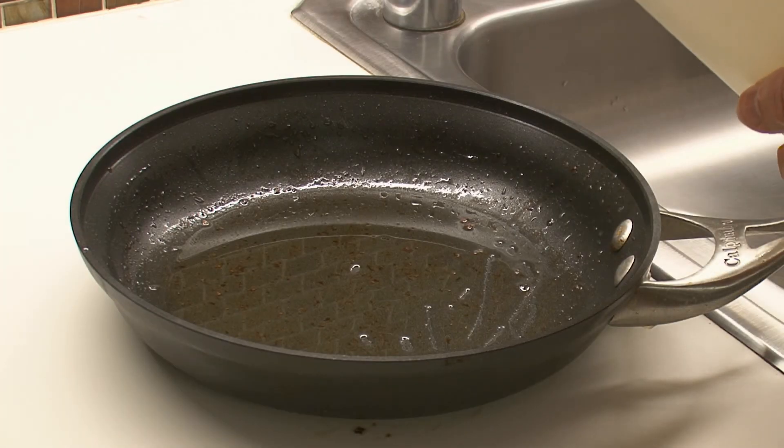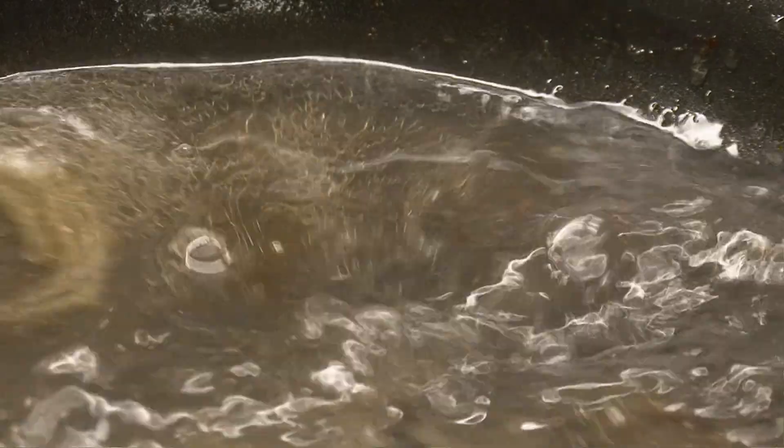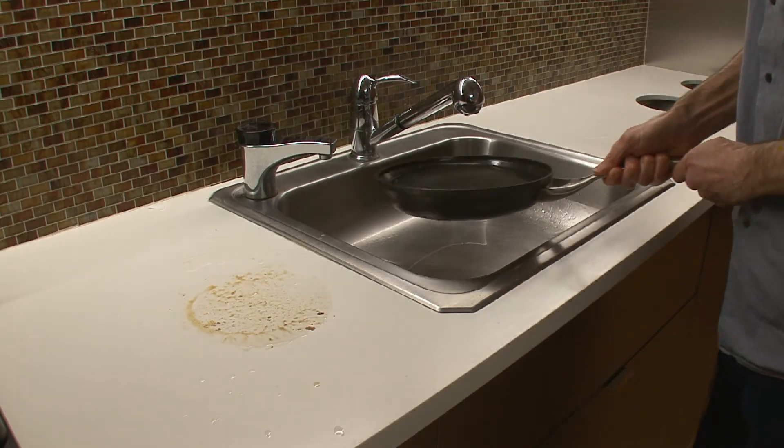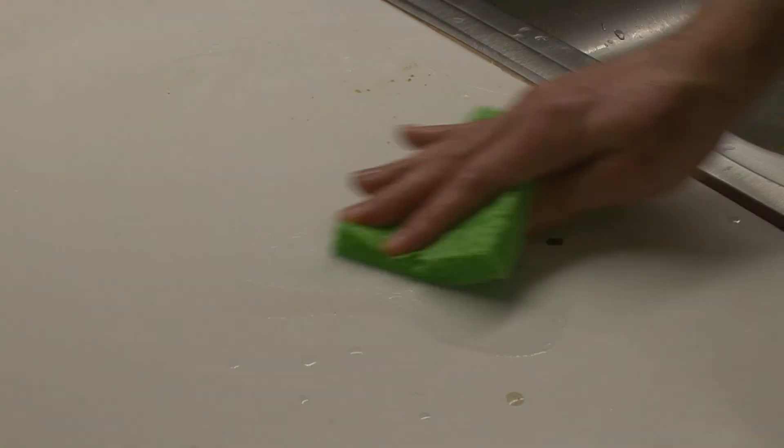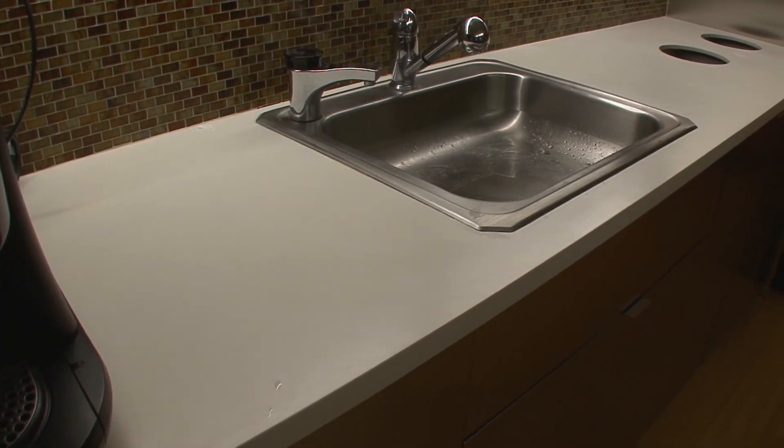The mass of greasy dirt is soon broken into bits, dispersed in the ammonia water, ready to be poured out, rinsed away, wiped up, leaving the kitchen surface damp but clean.